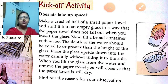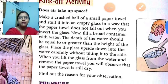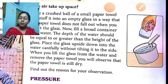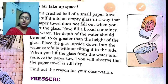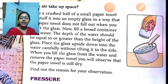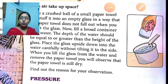Why does this happen? This happens because air occupies the space — air has volume. When we put the glass with the crushed paper towel straight into the water, air traps on top of the glass. Since air is less dense than water, air traps and occupies part of the glass, so the water does not go inside the glass and the paper towel does not become wet. This proves that air has volume and occupies space.